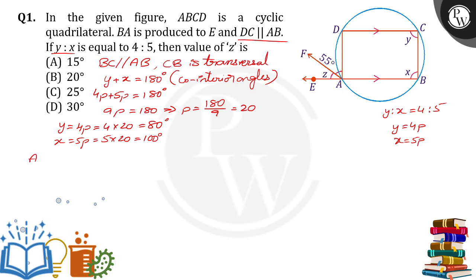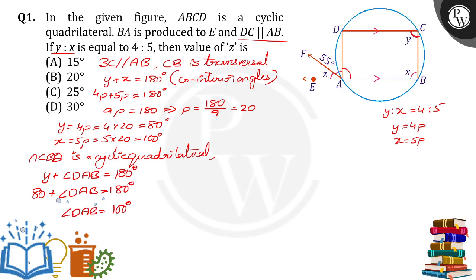Now, since ABCD is a cyclic quadrilateral, the sum of Y plus angle DAB equals 180 degrees. So 80 plus angle DAB equals 180 degrees. Therefore, angle DAB equals 100 degrees, which is 180 minus 80.